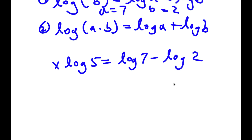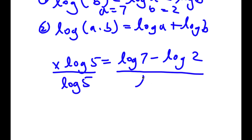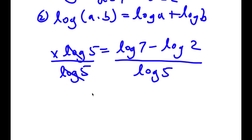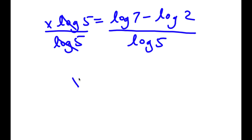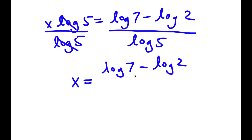Now to solve this problem, I'm going to isolate x. If I divide both sides by log 5, these two cancel out and I will be left with x is equal to log 7 minus log 2, all over log 5.